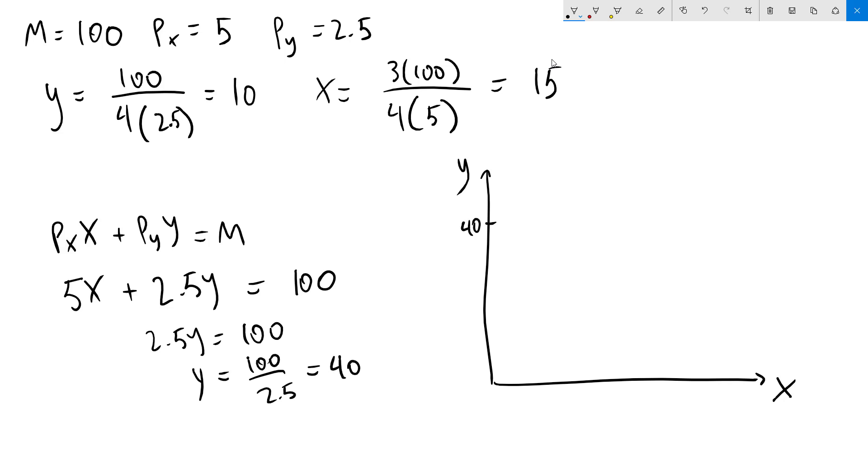So we have 40 over here. If we then plug in 0 for y, we get 5x equals 100. Therefore, x equals 20. This means our x-intercept is going to be 20. I'll draw my budget line in like so.